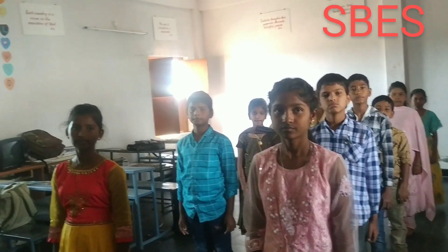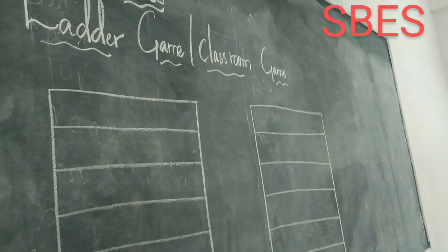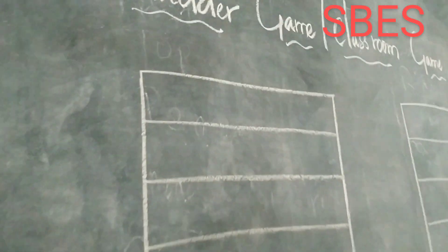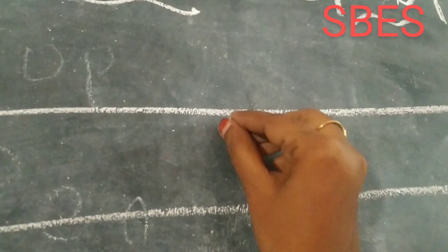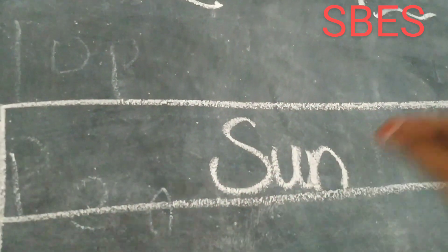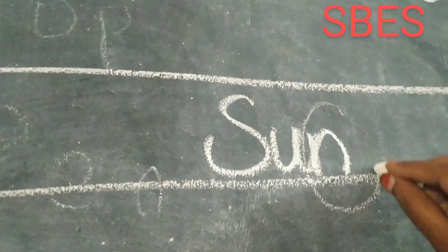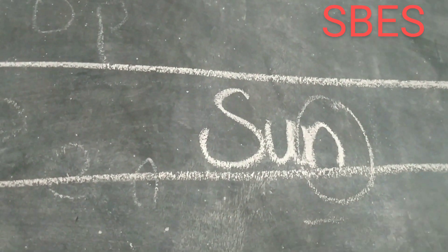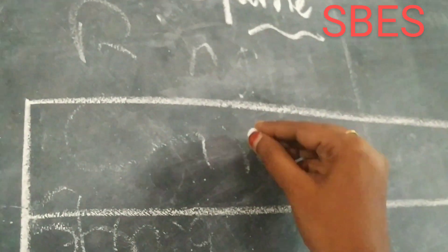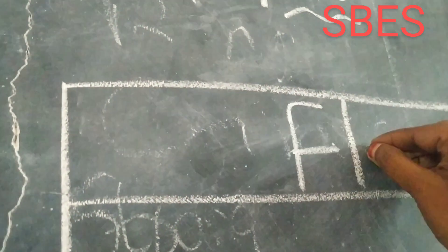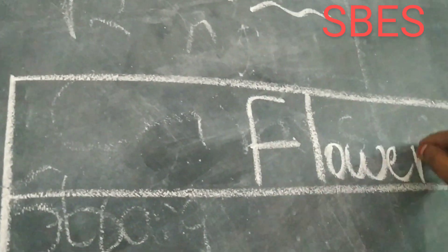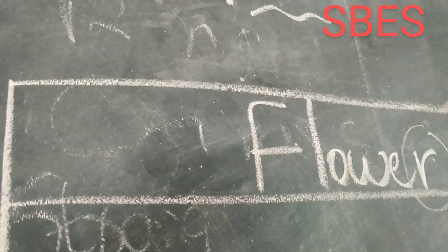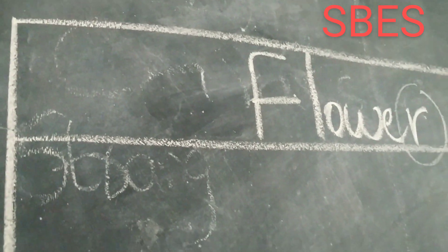For example, see this. In the first ladder I am writing 'sun.' With the last letter you should frame a new word. For the second ladder I am writing 'flower.' What is the last letter in this? R. With R you should frame a new word. Understood? Yes ma'am.